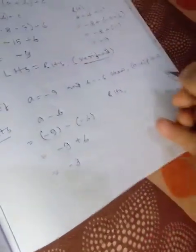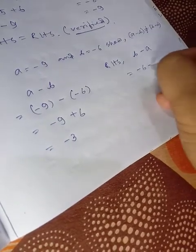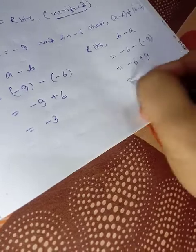And RHS: b - a. Now b = -6, minus (-9). -6 + 9 = 3.